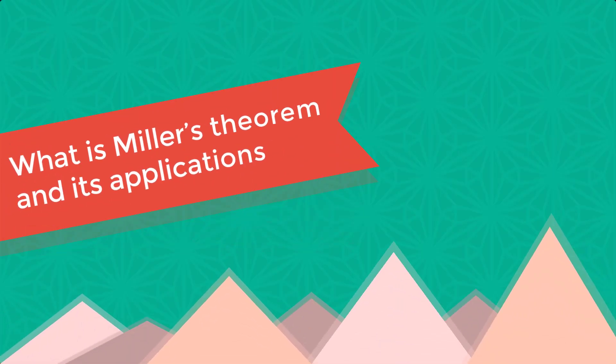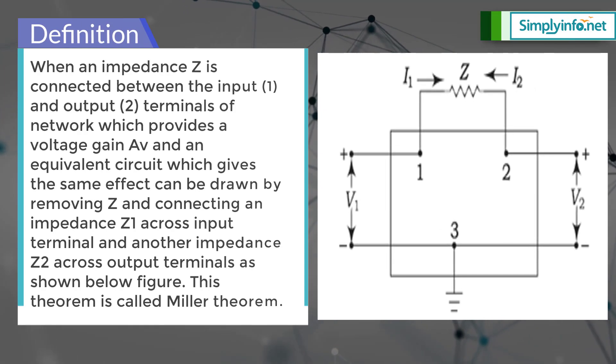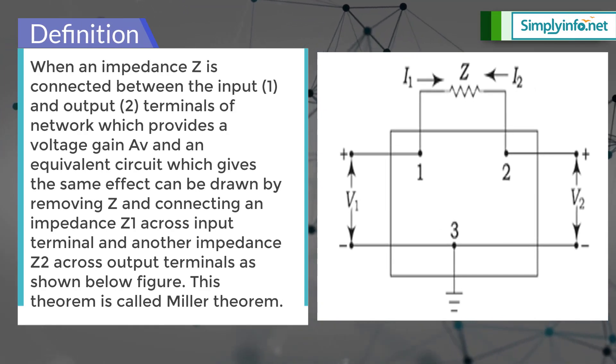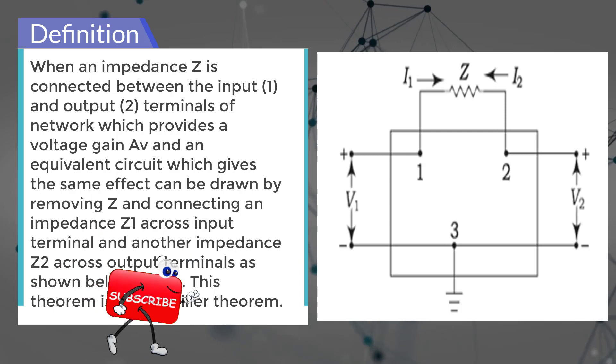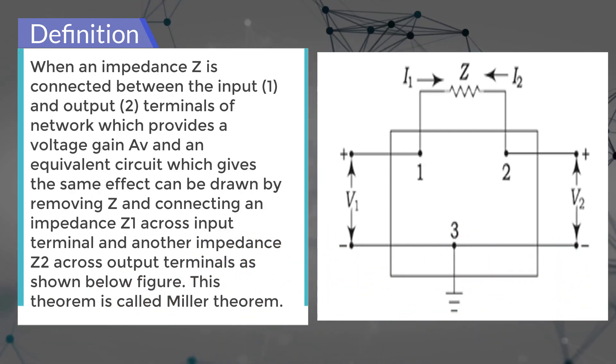What is Miller's theorem and its applications? When an impedance Z is connected between the input (1) and output (2) terminals of a network which provides a voltage gain, an equivalent circuit which gives the same effect can be drawn by removing Z and connecting an impedance Z1 across the input terminal and another impedance Z2 across the output terminals as shown here.